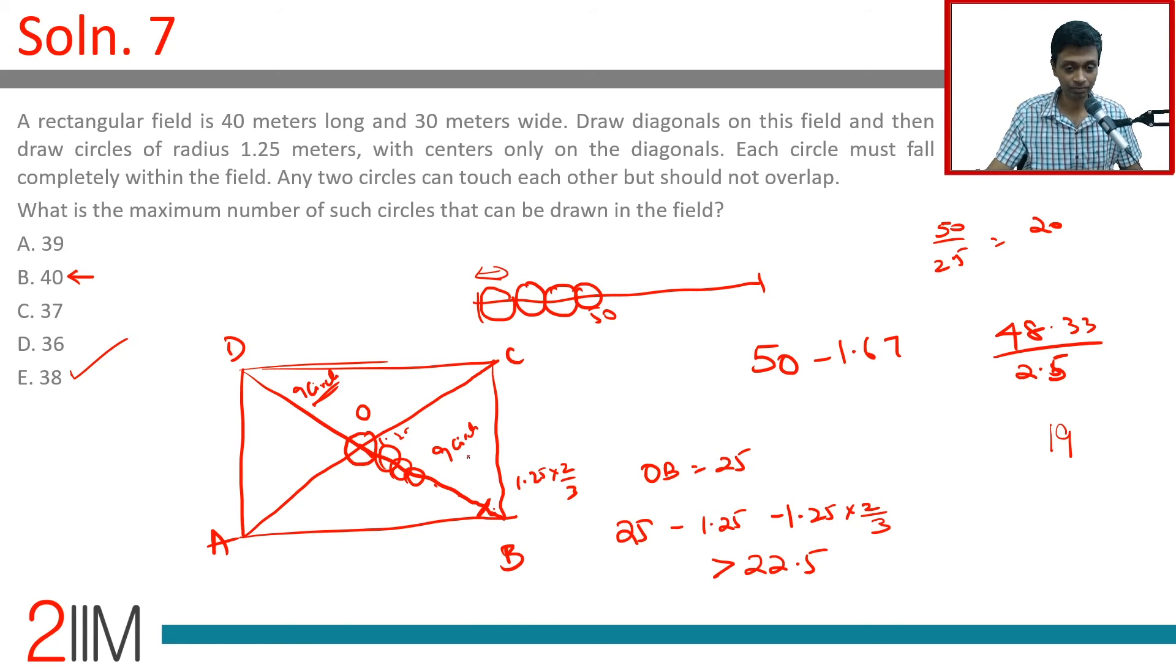9 plus 9, 18. 18 plus 19, 37 is possible. 40 is not possible. 39 is not possible. 36 we don't have to worry about.